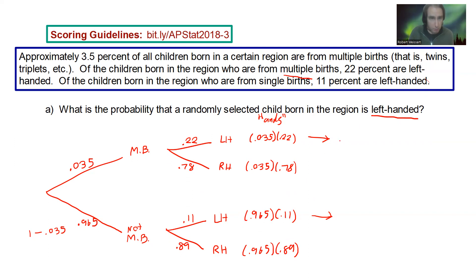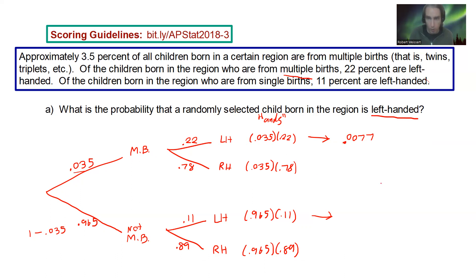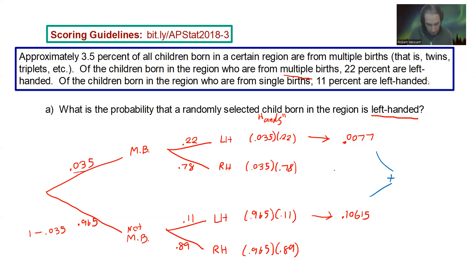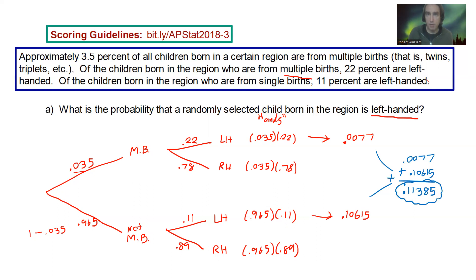The top branch — multiple births and left-handed — gives 0.035 × 0.22 = 0.0077. The single births and left-handed branch gives 0.965 × 0.11 = 0.10615. To find the overall probability of being left-handed, we add those two together: 0.0077 + 0.10615 = 0.11385. So the probability that a randomly selected child in the region is left-handed is approximately 0.11385, whether from multiple births or not.